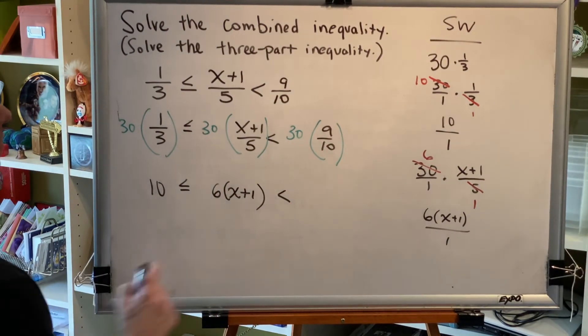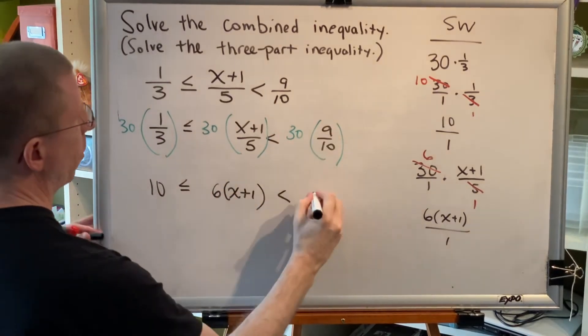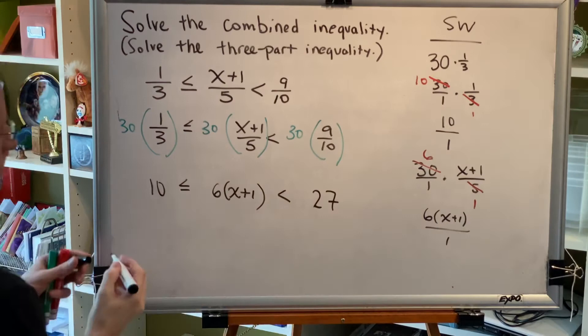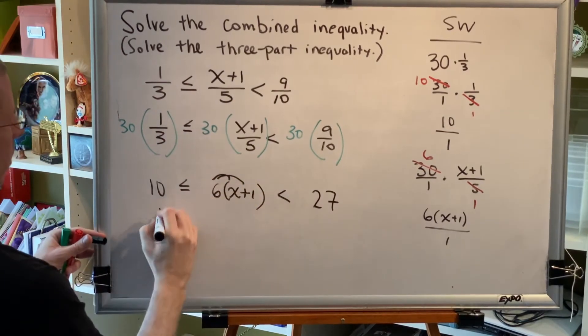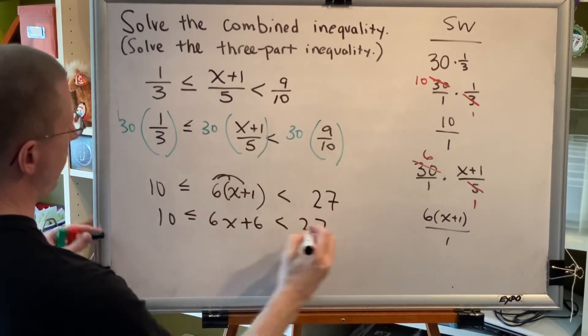This last one I'm going to do in my head. 30 divided by 10 is 3 times 9 is 27. Next, distribute. 10 less than or equal to 6x plus 6 less than 27.